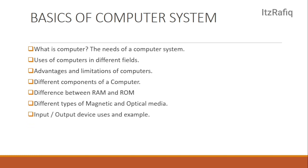After that, see the input and output devices. Some input and output devices are given in the book; see the uses of these devices. For example, a barcode scanner is used to read information from a product; a scanner is used to scan a document or paper; a joystick is mainly used to play games. Just read them once, and whatever you remember, write that in the exam. For output devices, the main output device is the monitor. Monitors are mainly two types: CRT and LCD. Printers are mainly two kinds: impact and non-impact — see the difference between these two.